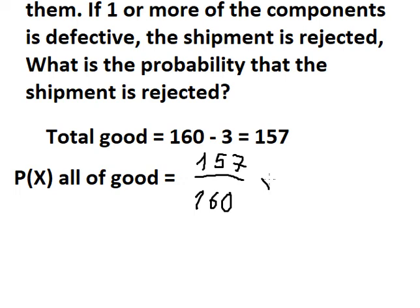Next we will have 156 over 159. Because the first one we just selected, now we have only 156 good and because we just select one unit, that's why we reduce to number one and we have 159.